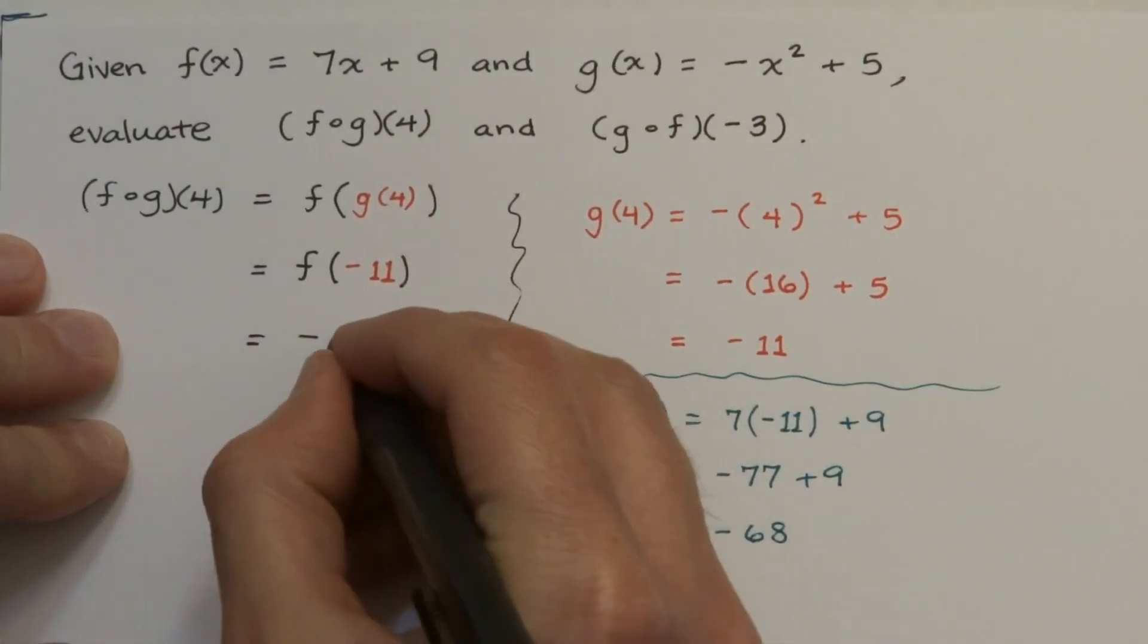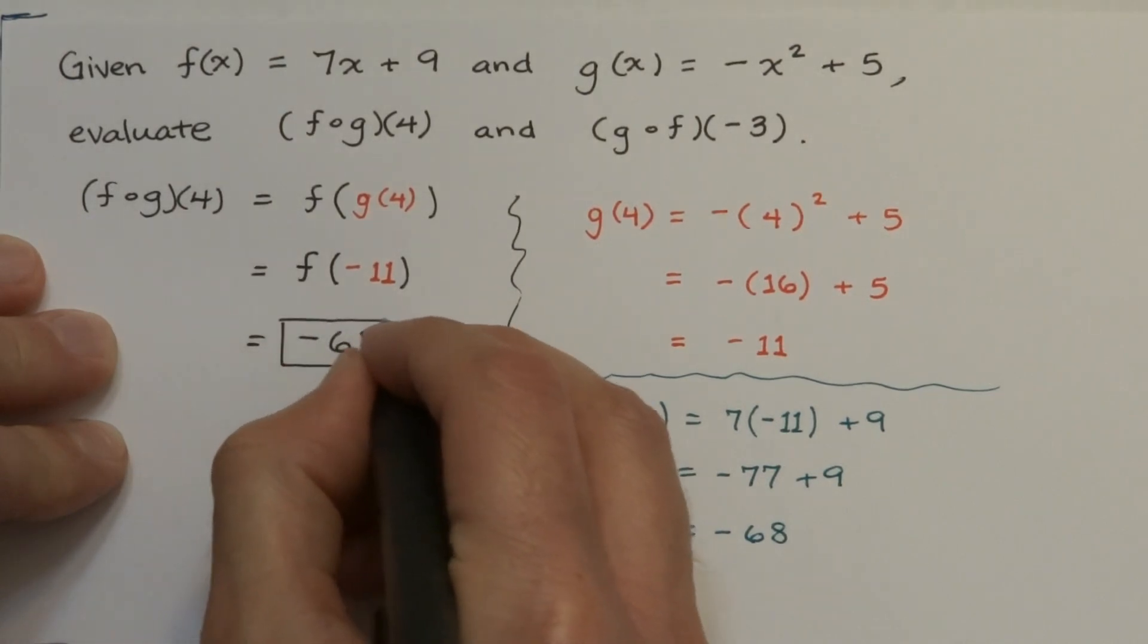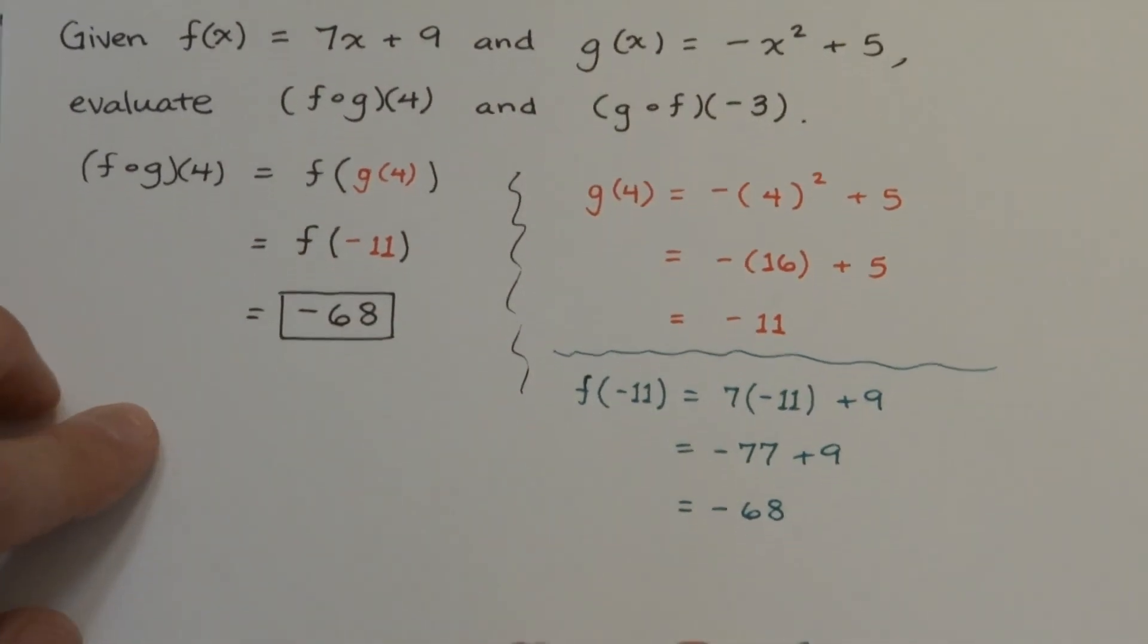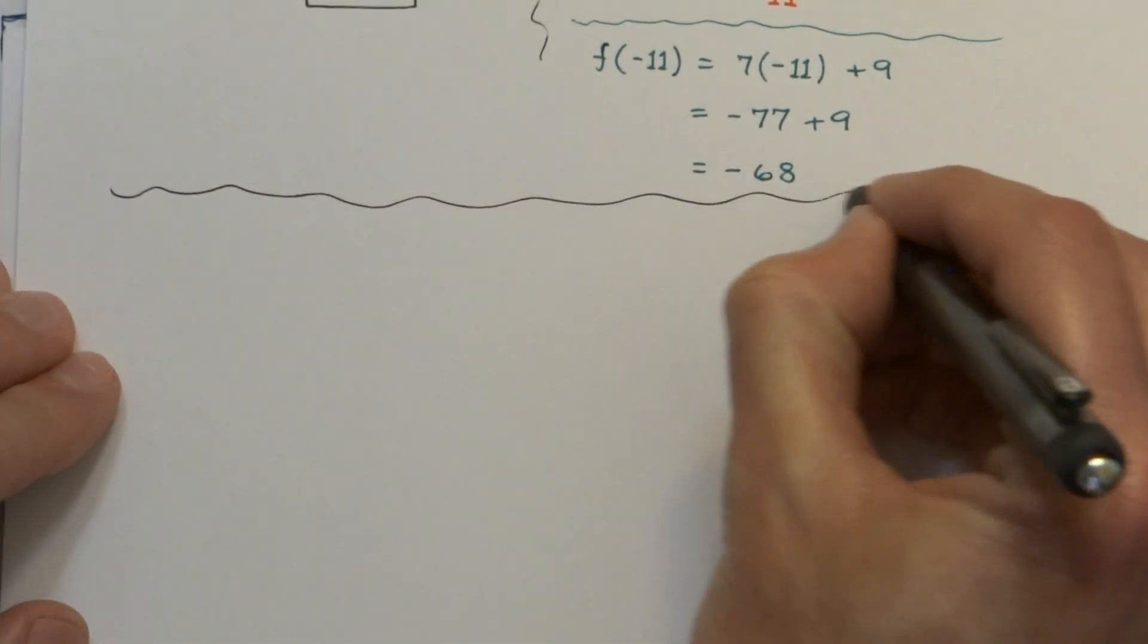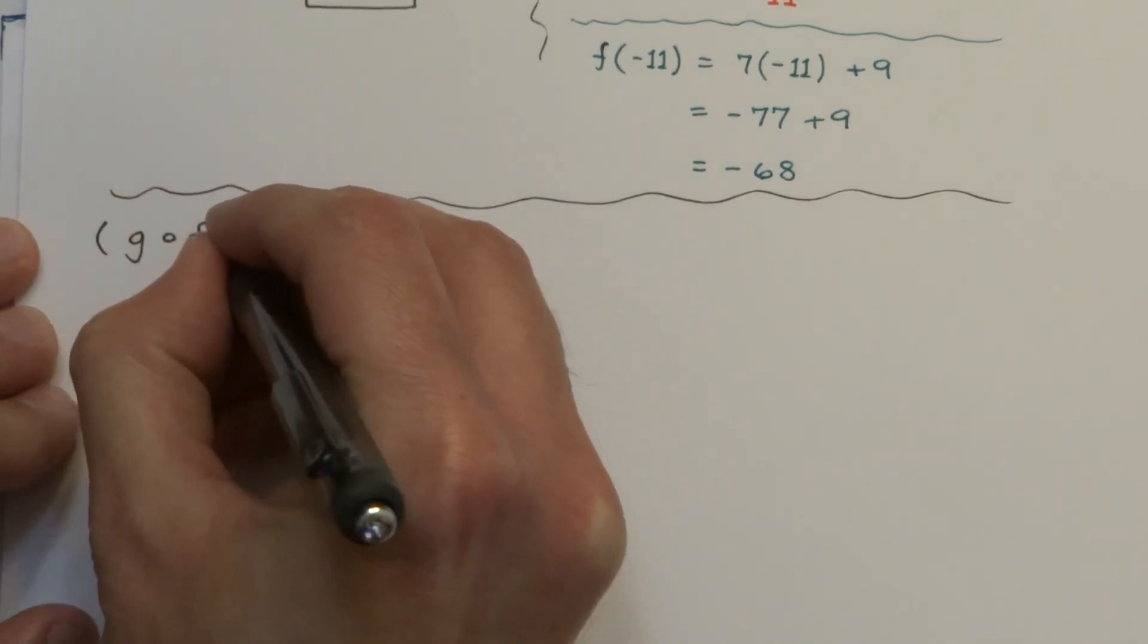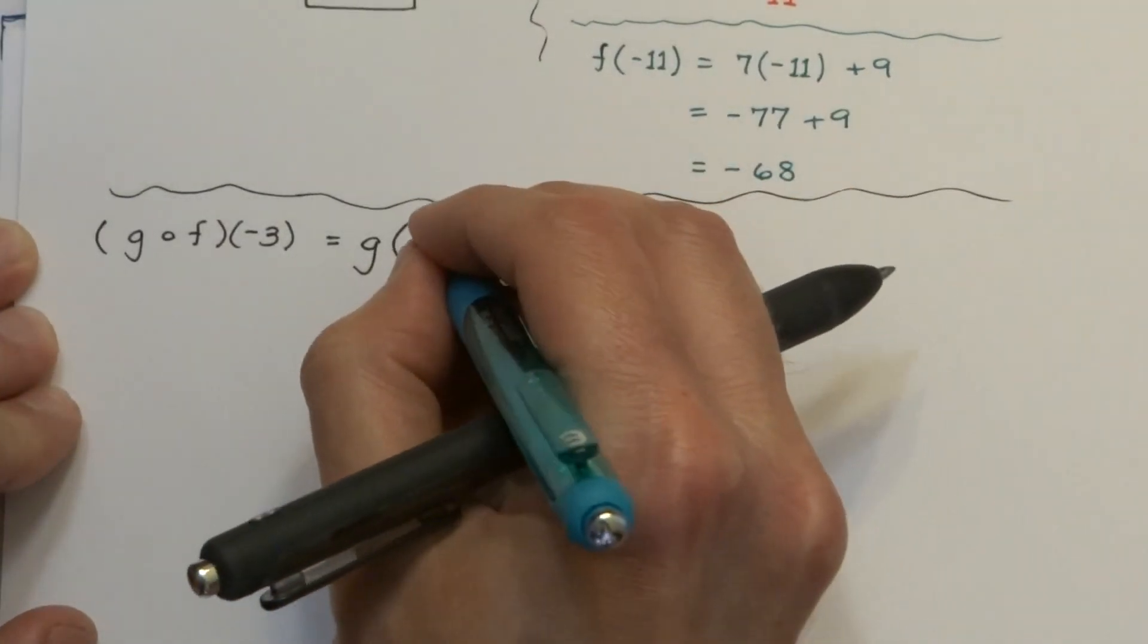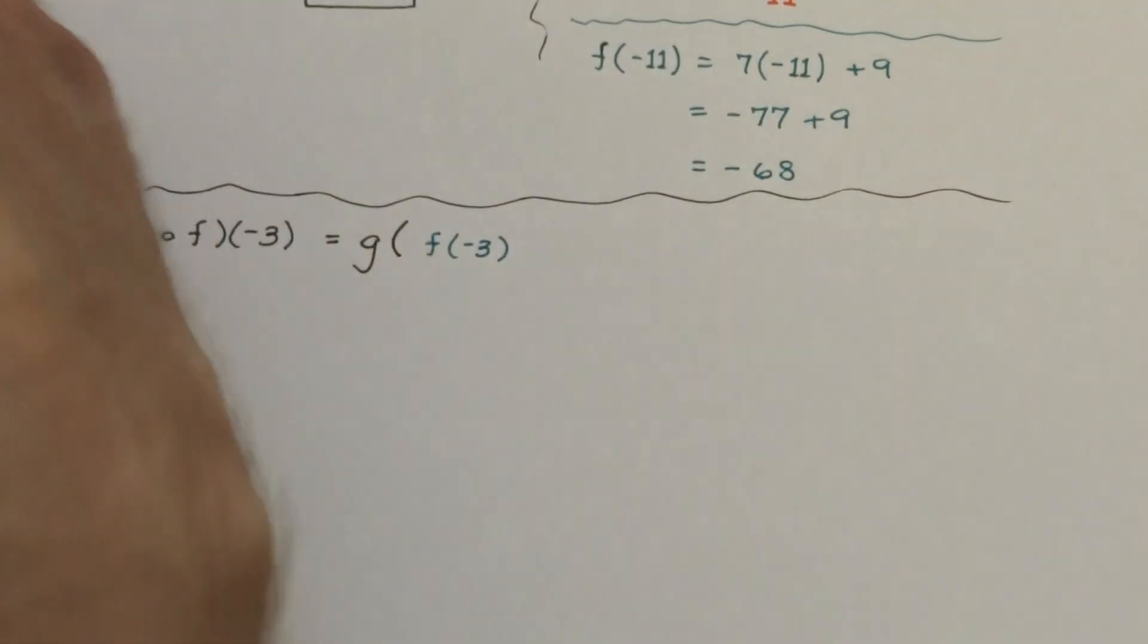So for this first composition we get negative 68 for the end result. And now let's see what happens if we do g of f of negative 3. So the way that we work this is the same way we work the last one. The order is very important. So g of f of negative 3 means that the first thing I'm going to need to do here is to evaluate my function f at the value negative 3.